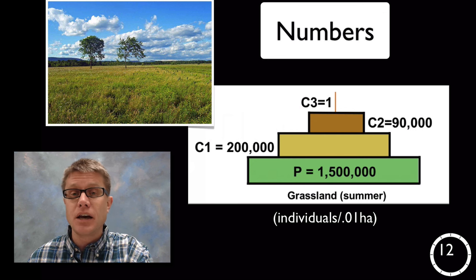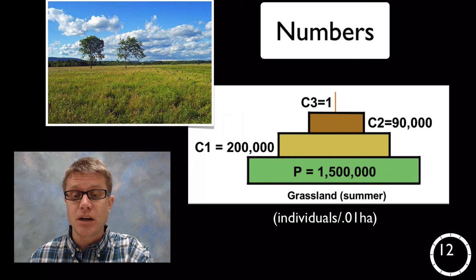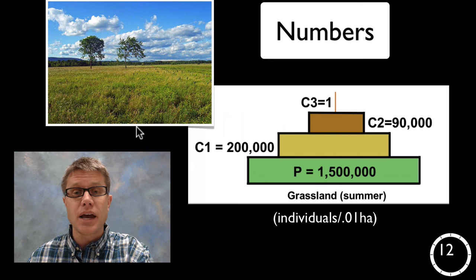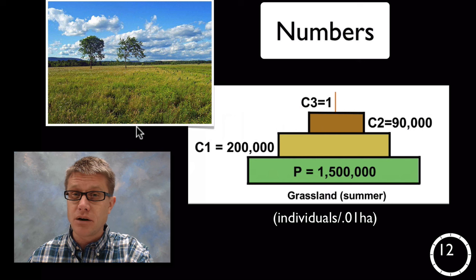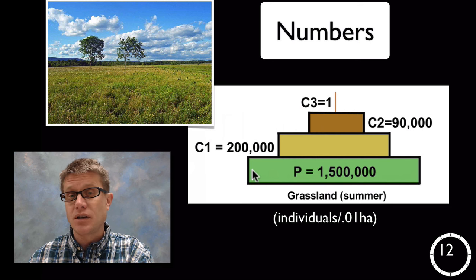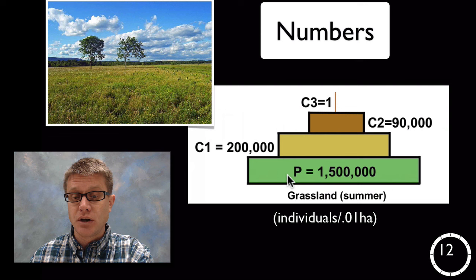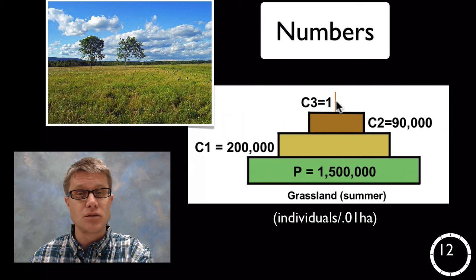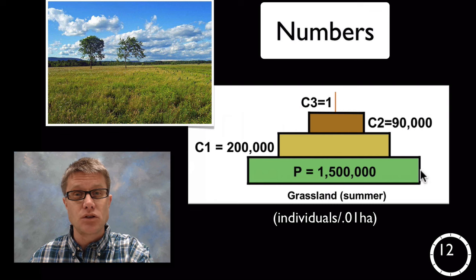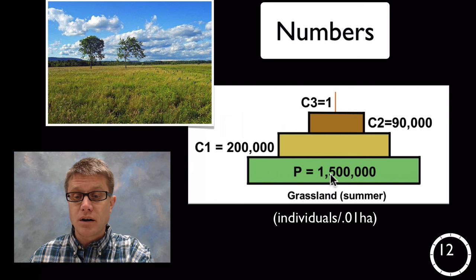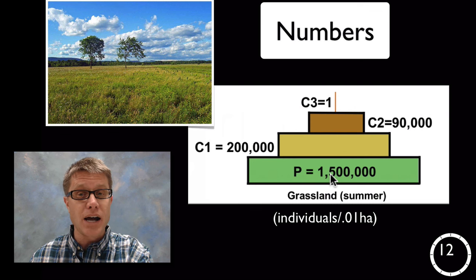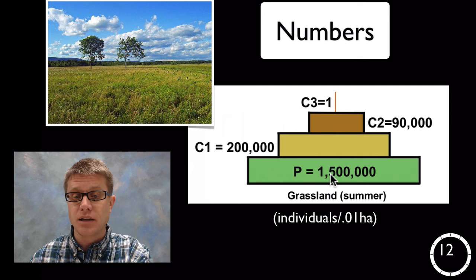This would be a number pyramid in a temperate grassland. And so basically in 0.01 hectares, which is not very much area, these are the number of individuals in this study that they found at the level of producers, first consumers, second consumers and third consumers. And what you can see is there's a nice pyramid in the number of individuals that we have. And so what are these 1.5 million individuals? It's going to be grass that's found within that temperate grassland.